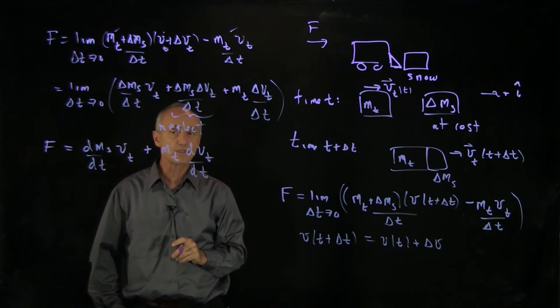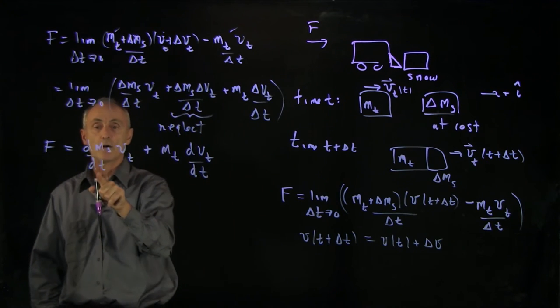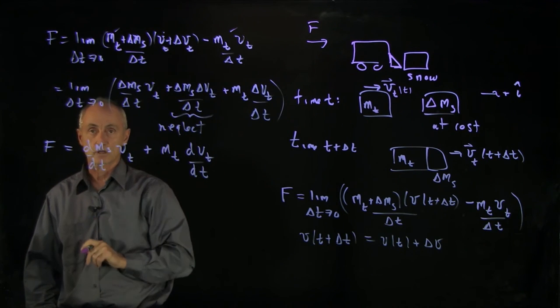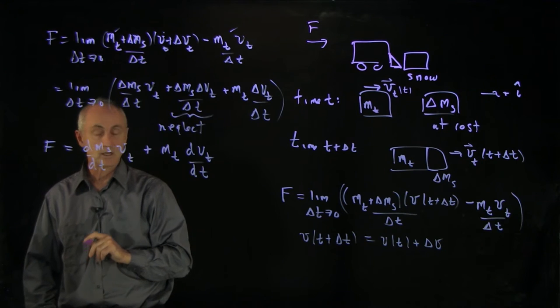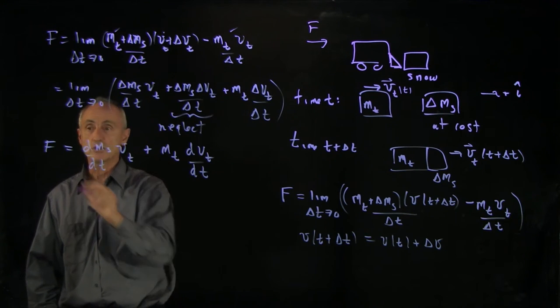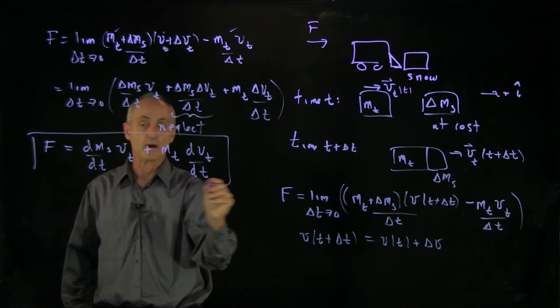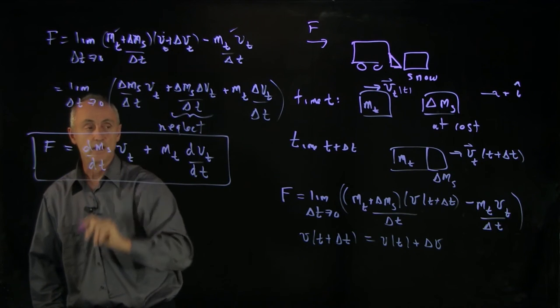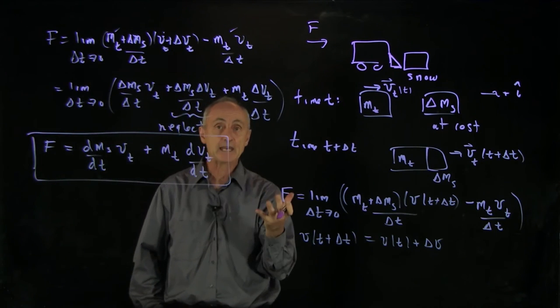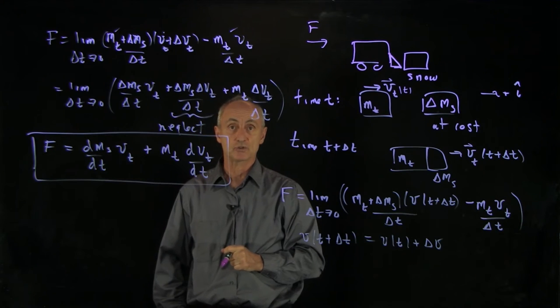plus mass of the truck times dvt dt. Now, the only issue that we have to think about here is about the rate that the truck, the snow, is being picked up. So that's our last consideration. But this will be our differential equation for adding mass continually to a system.